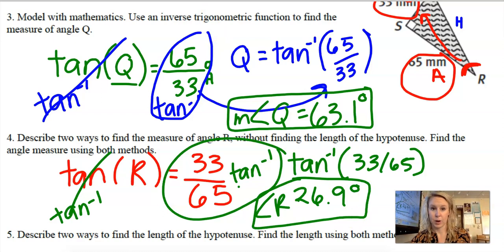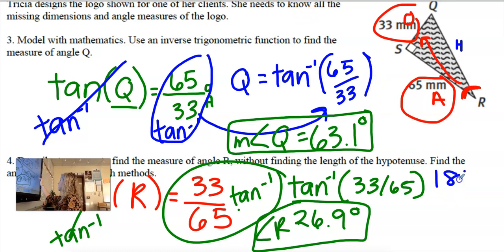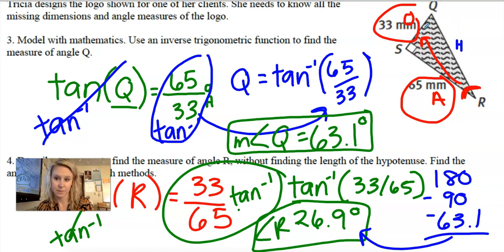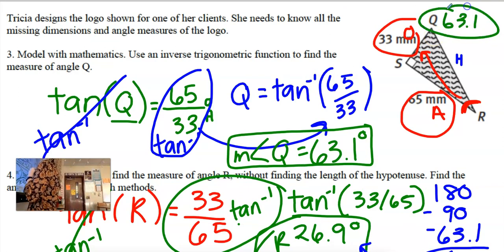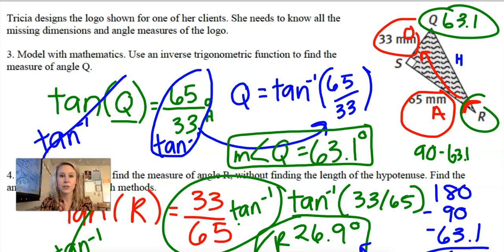The easy way: since I already know the top angle is 63.1, triangles add up to 180 degrees, so 180 − 90 − 63.1 gives the remaining angle. Another shortcut is that Q and R are complementary (they add up to 90), so 90 − 63.1 = 26.9 degrees — the same answer. That is how you find the angles of a triangle.